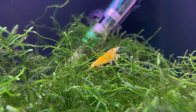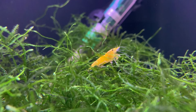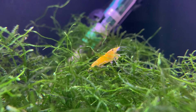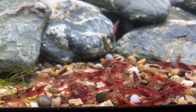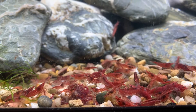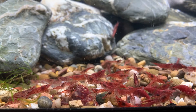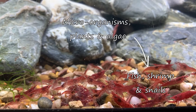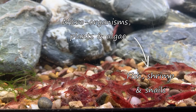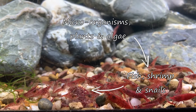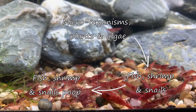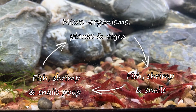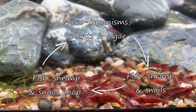So what exactly do we mean when we say the nitrogen cycle? Well, in the wider context, the nitrogen cycle is essentially a food chain created almost at a microscopic level. Microorganisms, plants, and algae grow, and they're consumed by fish, shrimp, and snails. And when those fish, shrimp, and snails go to the bathroom, their waste is in turn consumed by microorganisms, plants, and algae. And so the cycle continues.